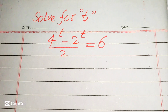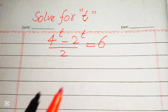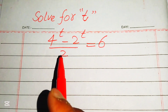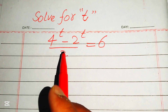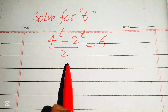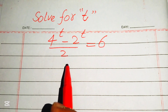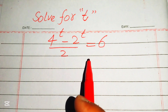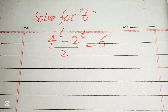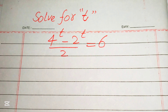Hello everyone, welcome to solve this nice math olympiad algebra problem. We have 4 to the power of t minus 2 to the power of t divided by 2, and it equals 6. We will solve this problem for the values of t.